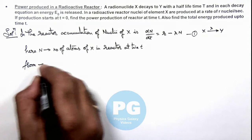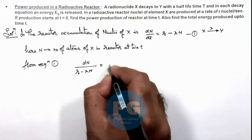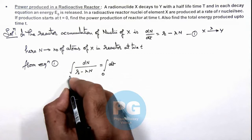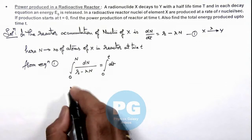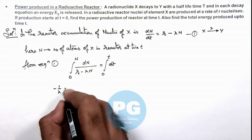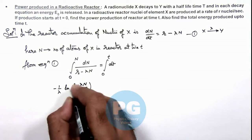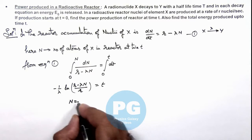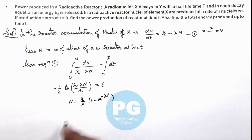From equation 1 we can write dN divided by (R minus λN) is equal to dt. Integrating this equation with the condition that at t equal to zero the number of X atoms is also zero, and at a general time t there are N atoms of X. On integrating and substituting the limits, this gives us minus 1/λ times ln[(R minus λN)/R] equals t. Further simplifying gives us the value of N as a function of time: N = (R/λ)(1 minus e to the power minus λt). This gives us the number of X atoms in the reactor at time t.